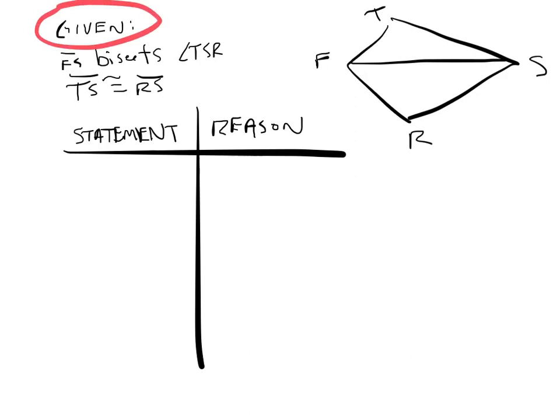So we know that this line right here cuts this little guy right in the middle. If that cuts that in the middle, that is called an angle bisector.